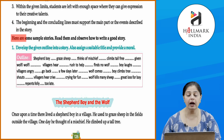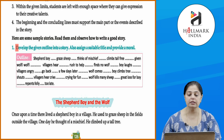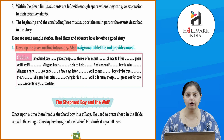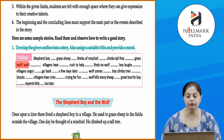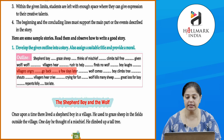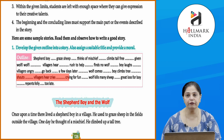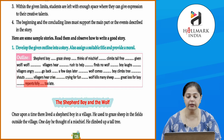Now here are some sample stories — read them and observe how to write a good story. First, develop the given outline into a story and assign a suitable title. The outline is: shepherd boy, grey sheep, thought of mischief, climbs tall tree, cries wolf, villagers hear and rush to help, find no wolf, villagers angry, go back. A few days later, wolf comes, boy climbs tree, shouts again, villagers hear cries but think it's just for fun.